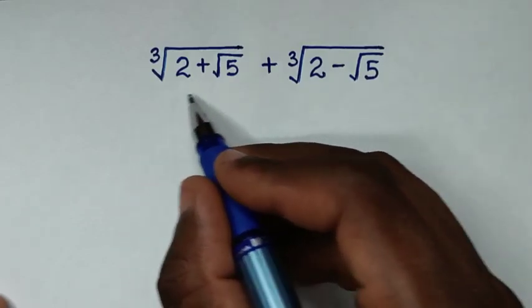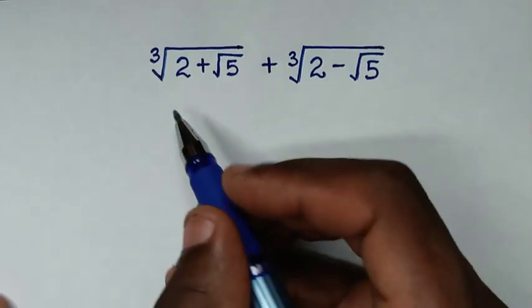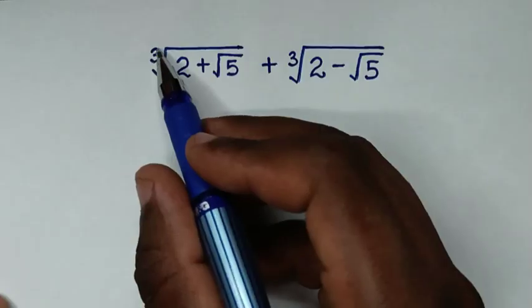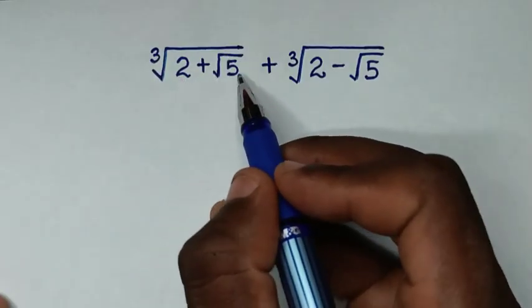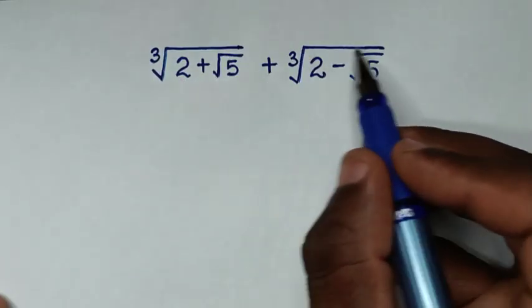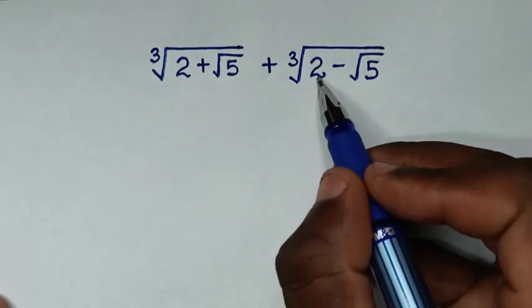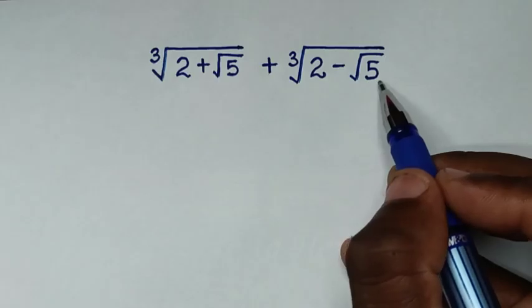You are welcome to solve this math problem by simplifying cube root of 2 plus square root of 5, plus cube root of 2 minus square root of 5.